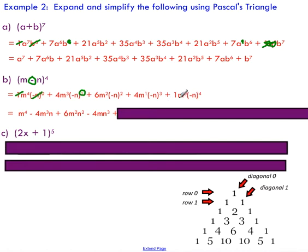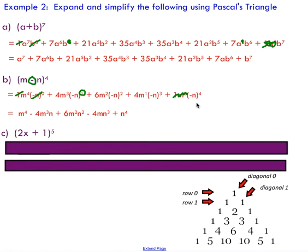Make sure you're up to date on your exponent rules: raising anything to the power of an even exponent will always give you a positive number. But if you've got a negative base and you're raising it to an odd exponent, you will end up with a negative number. That has to be reflected in your expansion.